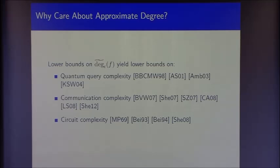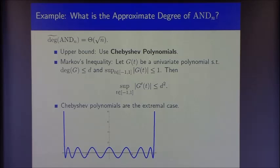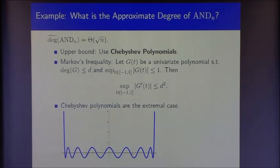I want to quickly run through a relatively simple example to familiarize ourselves with the concept. I'll characterize the approximate degree of the AND function, which has been known for 20 years since the seminal work of Nisan and Szegedy. The approximate degree of the AND function is √n. The upper bound makes use of the Chebyshev polynomials, an extremely useful extremal family of polynomials.